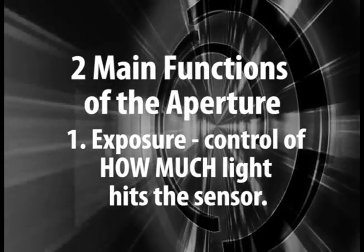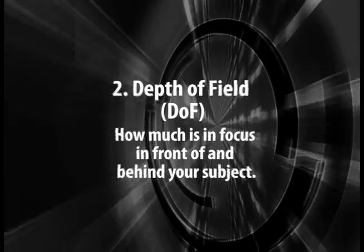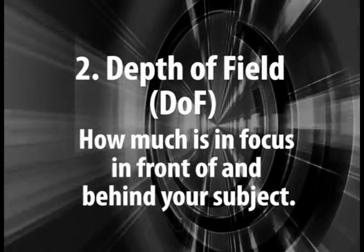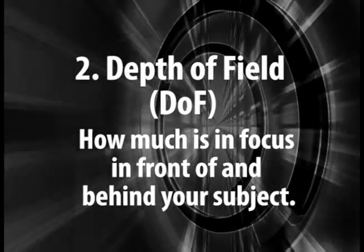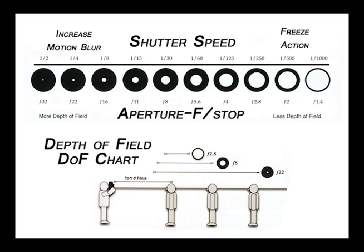There are two main functions of your aperture. The first is the exposure onto the image sensor, and the second is your depth of field — how much is in focus within the frame around your subject. Let's look at a chart that will give you an example of what aperture and depth of field are.